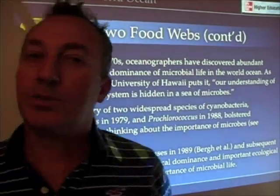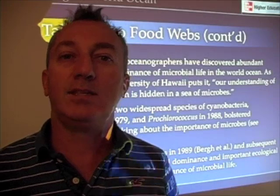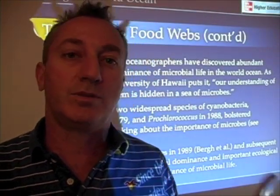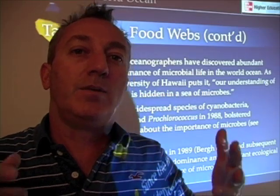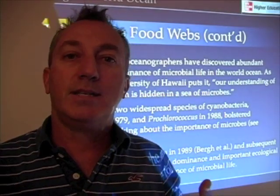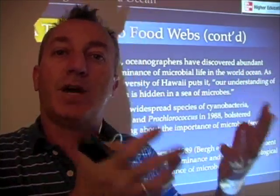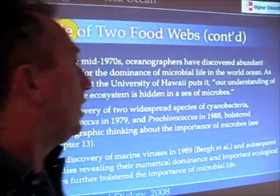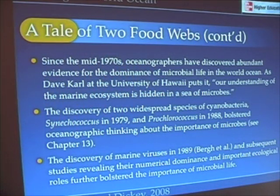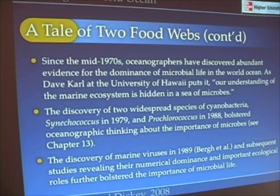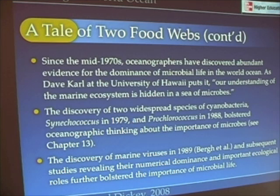The microbial food web was really bolstered by several researchers in the late 70s, through the 80s, 90s, and even recent times. Discoveries show that microbial organisms operate on a different time and space scale from the larger phytoplankton, zooplankton, and fish of the classical food web. A good example is the discovery of cyanobacteria in 1979, particularly the species Synechococcus, and another discovered in 1988, Prochlorococcus, which we talked about in Chapter 13, along with the discovery of marine viruses.